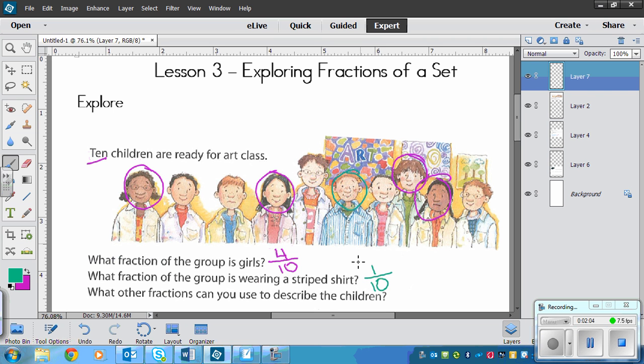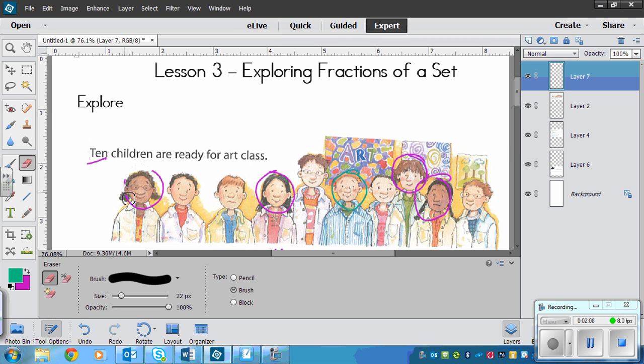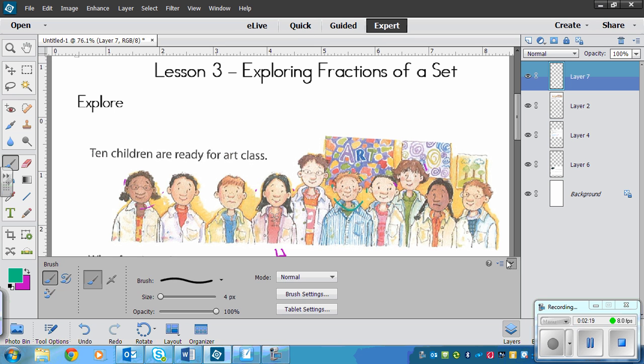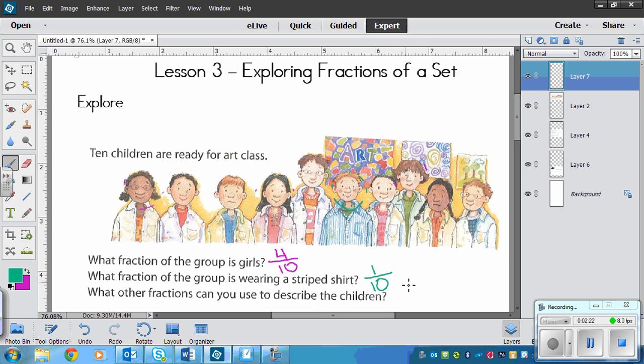Now you could have had a variety of answers for the last one here because you could literally just take any feature that at least one person has and then use it. You could have said the number of children who are wearing glasses, and so we've got one here, one here, and one here. So that's three out of ten. Whatever you put, it needs to be out of ten.